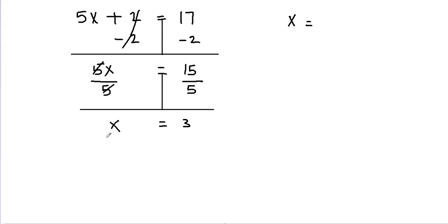We're able to get x by itself in two simple steps. The first step was to remove the number that is added or subtracted to the variable. And the second step is to get x by itself by dividing it with the coefficient. So we got x equals 3.